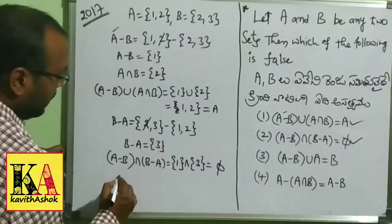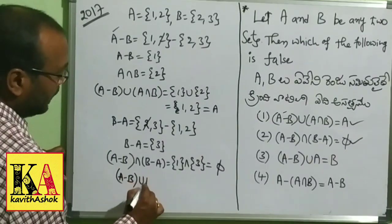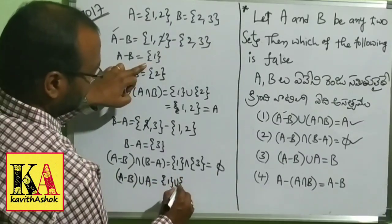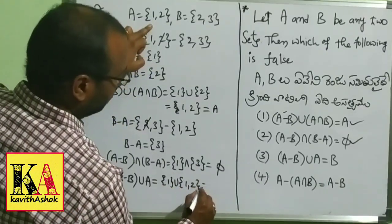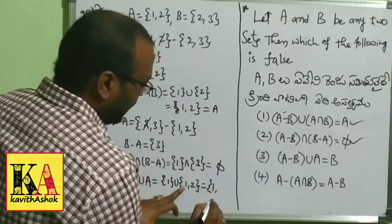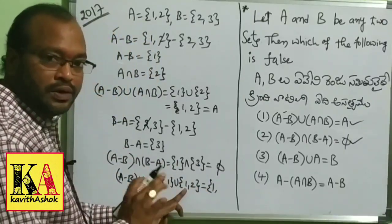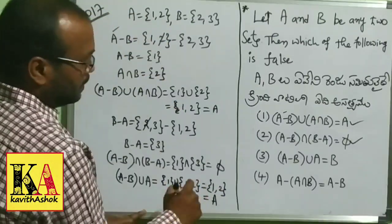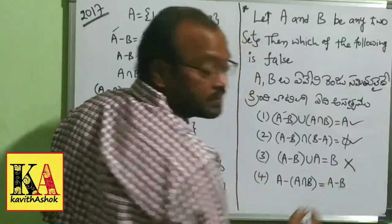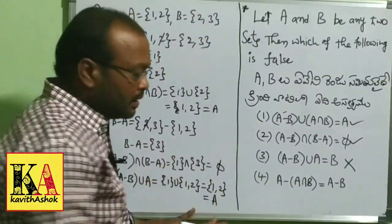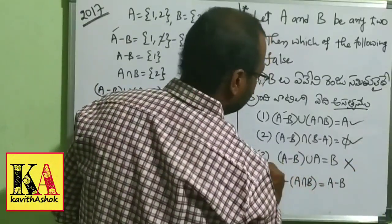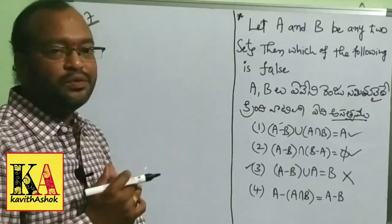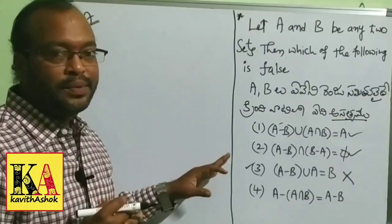Next, the third condition: (A−B) ∪ A. A−B = {1}, A = {1,2}. So (A−B) ∪ A = {1} ∪ {1,2} = {1,2}. There's no repeat, so the result is {1,2}. I will also try to show a shortcut using the Venn diagram method.